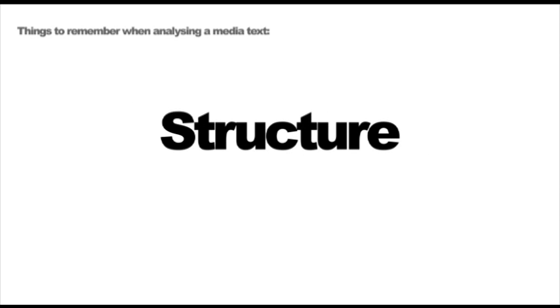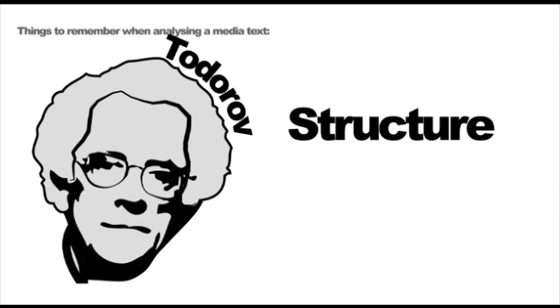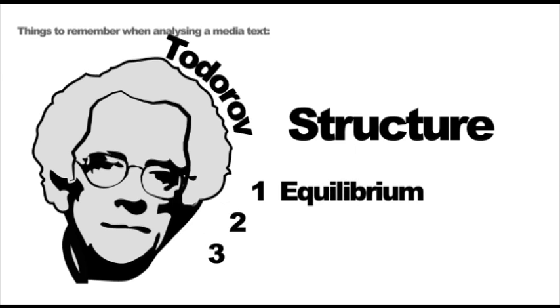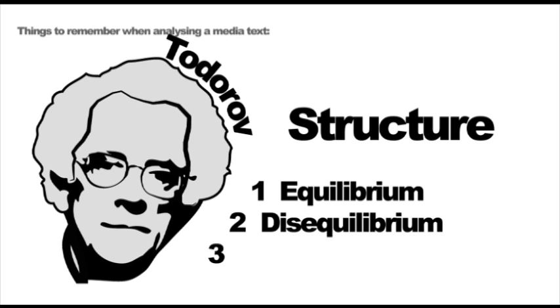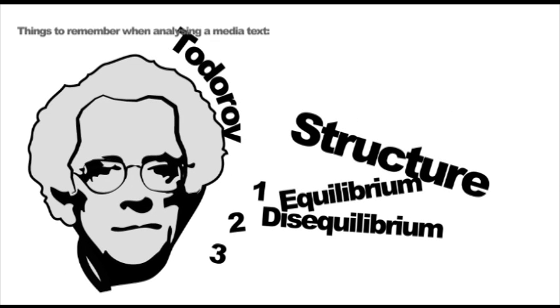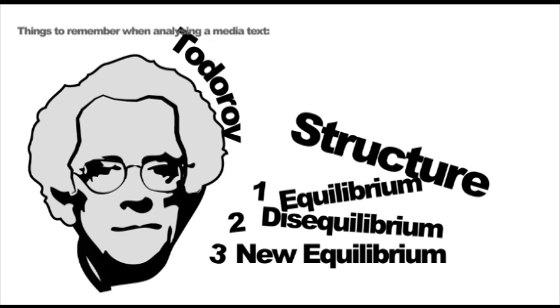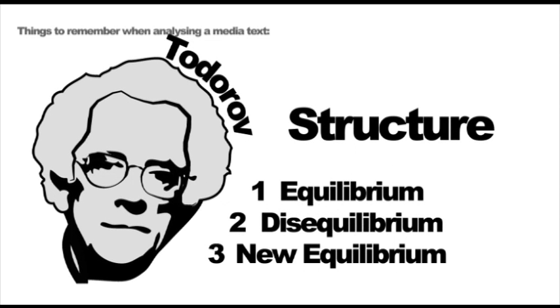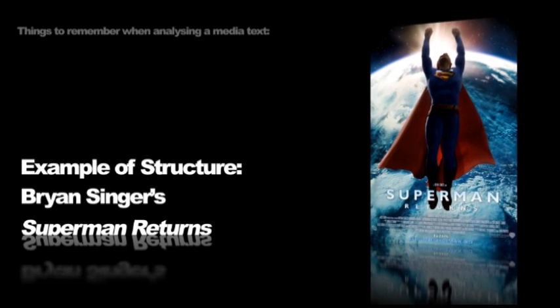Most narratives can be summed up using Todorov's theory, which suggests all narratives follow a three-part structure. Equilibrium — the beginning, where everything is fine. Disequilibrium — the middle, where something comes along to disturb the equilibrium. And new equilibrium — the end, where usually our hero restores equilibrium. Superman Returns is a good example of this.